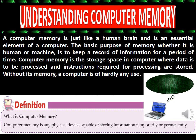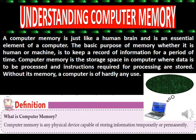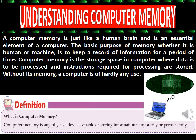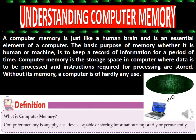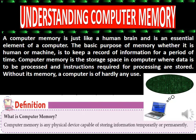Understanding Computer Memory. A computer memory is just like a human brain and is an essential element of a computer. The basic purpose of memory, whether it is human or machine, is to keep a record of information for a period of time. Computer memory is the storage space in a computer where data is to be processed and instructions required for processing are stored. Without its memory, a computer is of hardly any use.